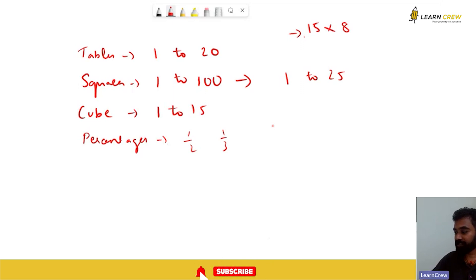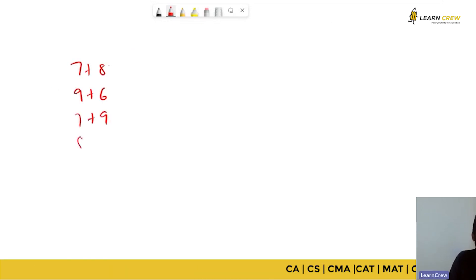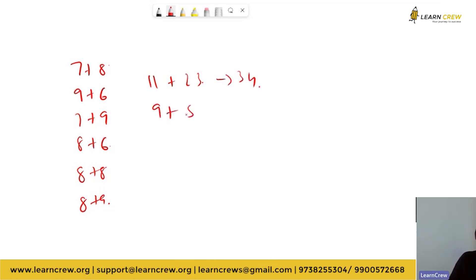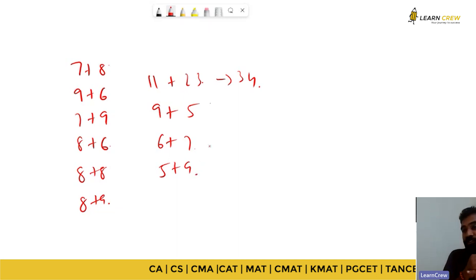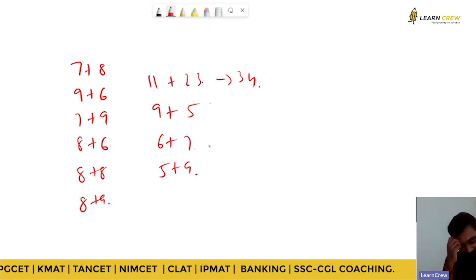Let's start with addition. Let us see how quick your addition is. What is 7 plus 8? 59 plus 6. 7 plus 9, 16. 8 plus 6. 8 plus 8. 8 plus 9. 11 plus 23? 34. 24. Correct, 34. So 9 plus 5, 6 plus 7, 5 plus 9. All are aware of single digit addition.